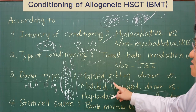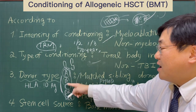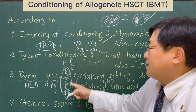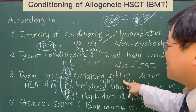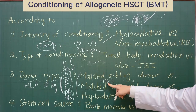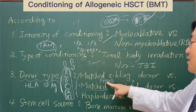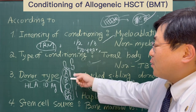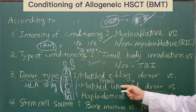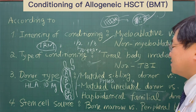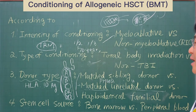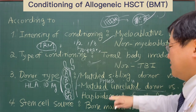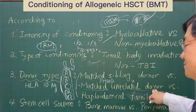When an unrelated donor has 9 of the 10 HLA typings the same as the patient's HLA, we can refer to this kind of donor as a partially mismatched or partially matched unrelated donor. If one HLA locus is different between the donor and the patient, we can use this partially matched unrelated donor successfully, even though the outcome is less favorable compared to the fully matched unrelated donor.